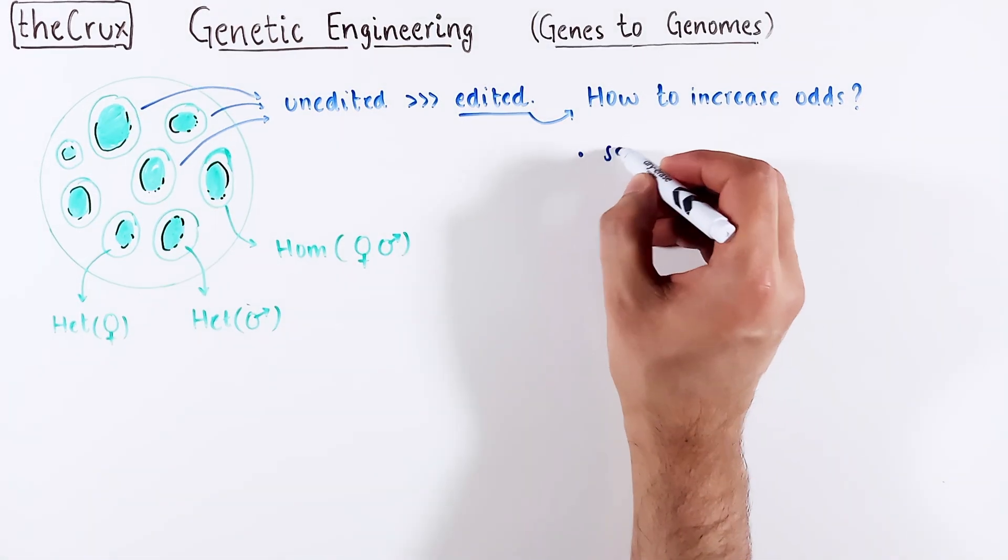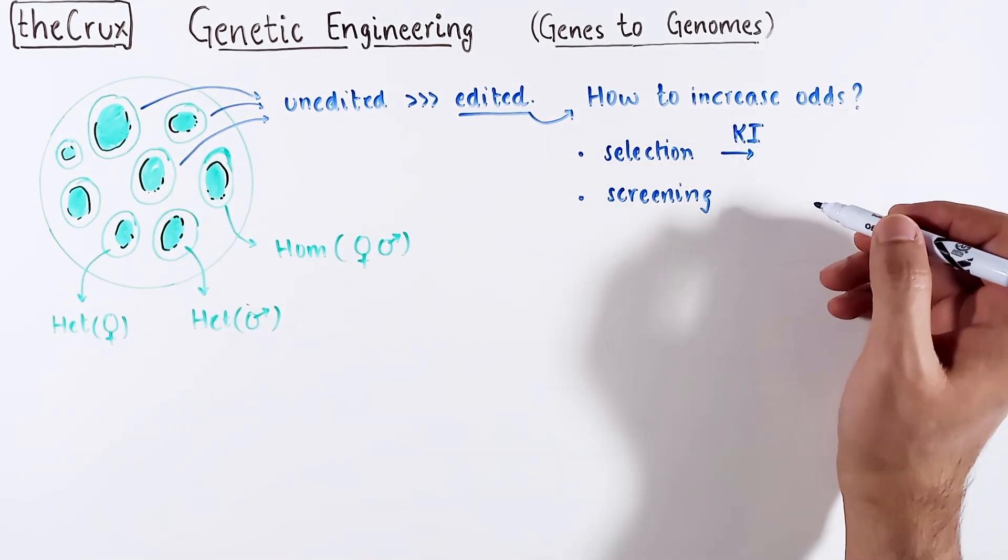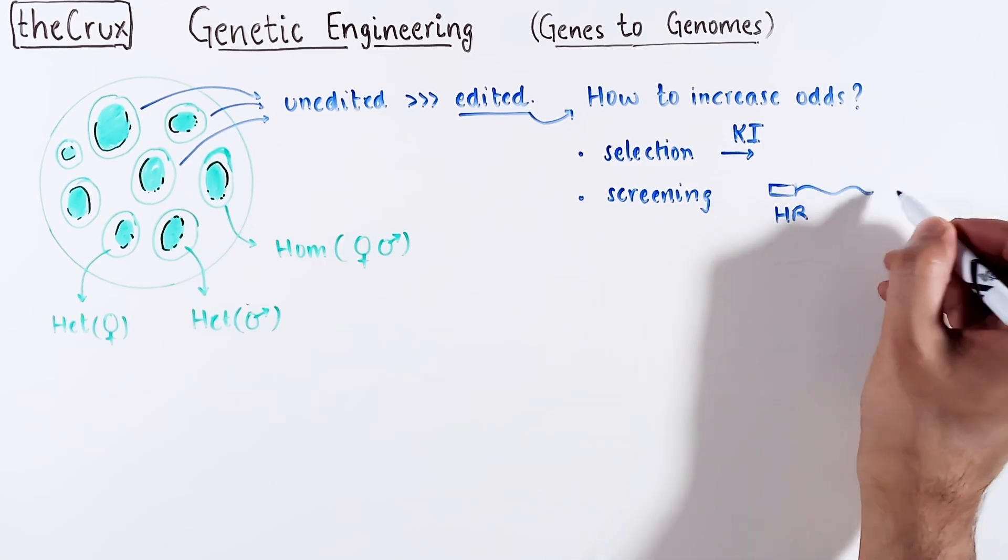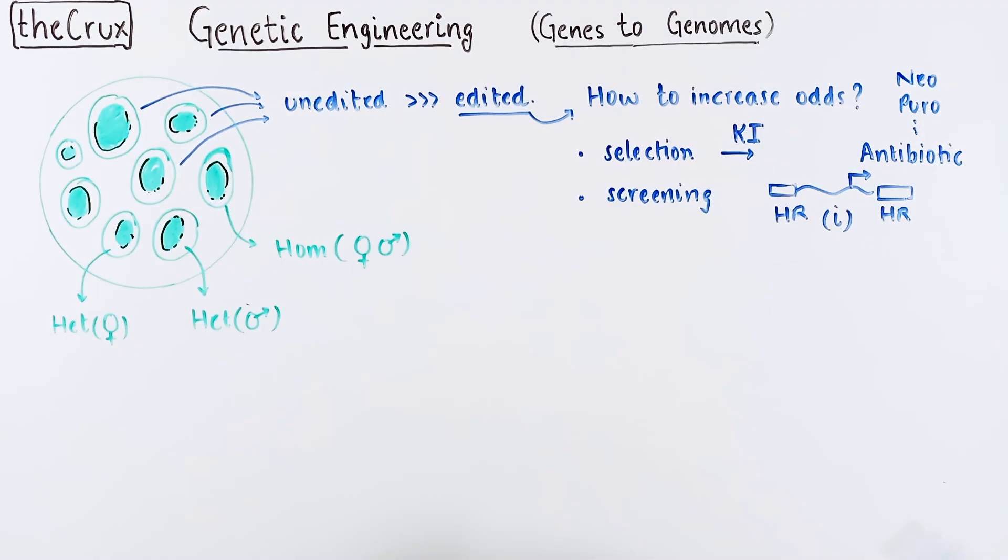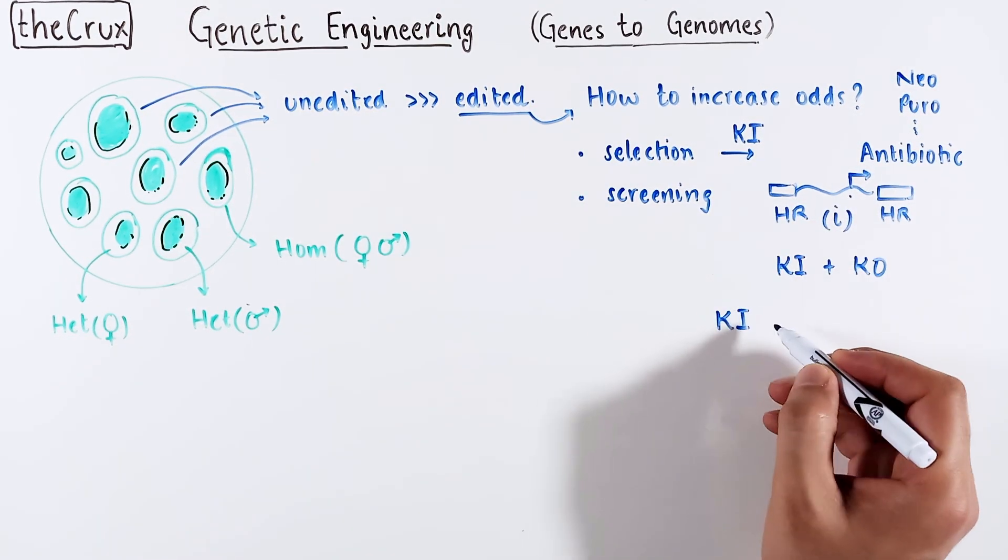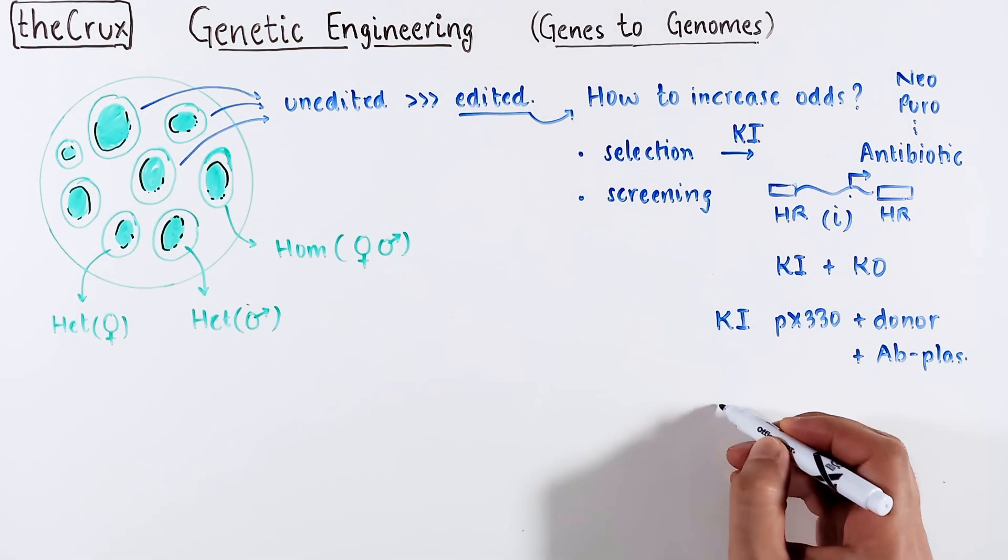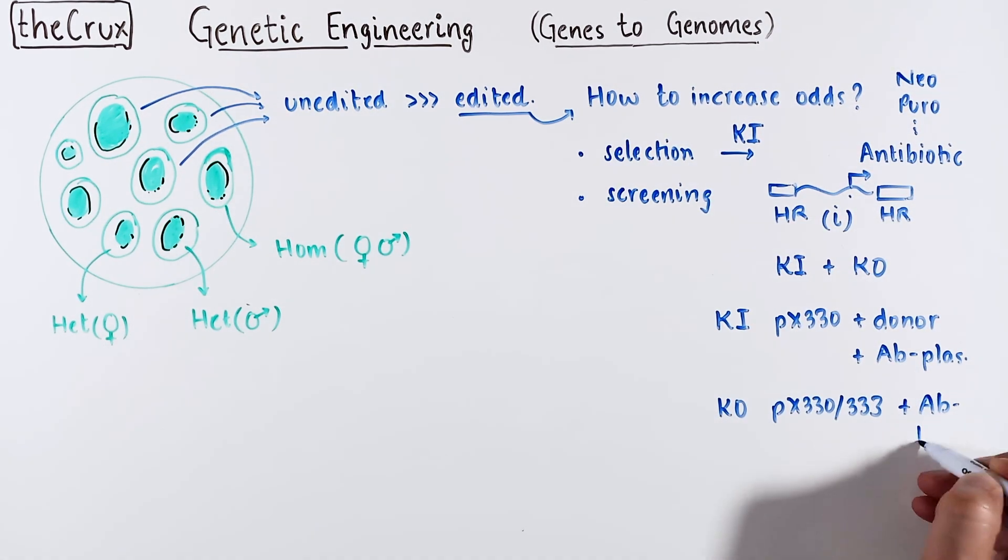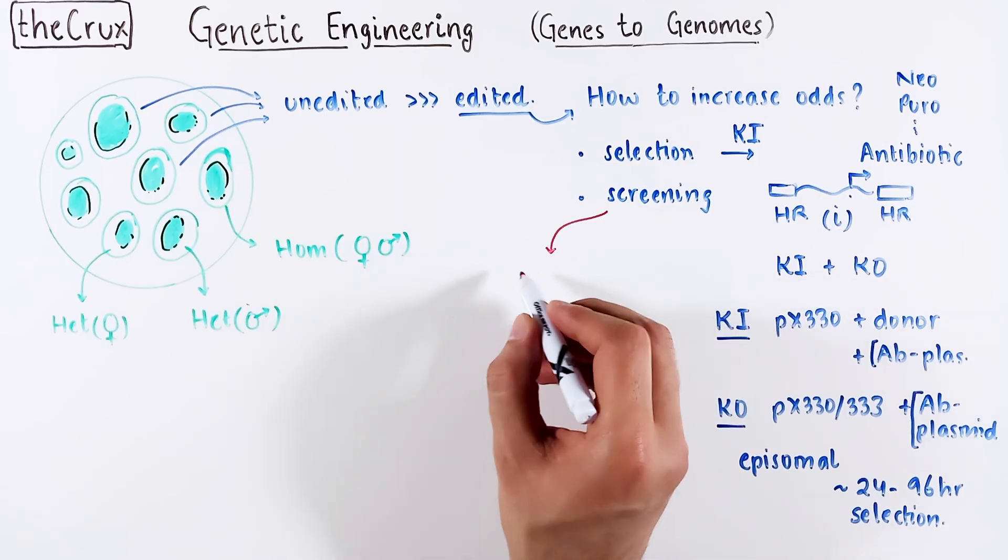One way is to select and the other way is to screen. Both of these are quite relevant for knock-ins because you can add an antibiotic marker along with the insert that you can use to kill all the non-edited cells. Alternatively, for both KO and KI, you can also co-deliver an additional piece of plasmid containing the antibiotic marker and use the episomal nature of the plasmid to select cells with cargo delivery for 2-4 days. This is useful if you do not want to add a marker into the genome.